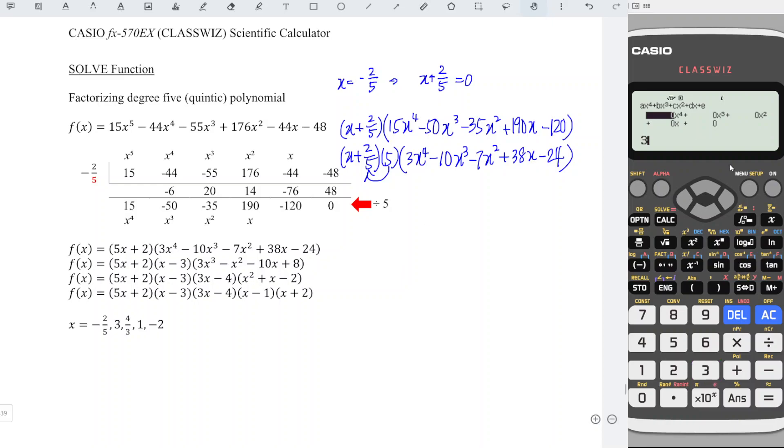So we have 3 equal, negative 10 equal, negative 7 equal, 38 equal, negative 24 equal. Equal again, we should obtain x1 is equal to 3.